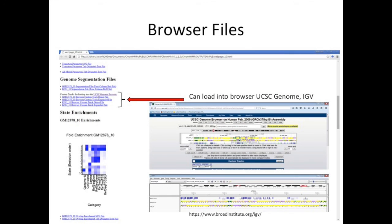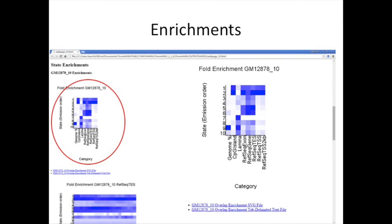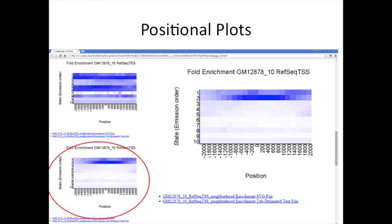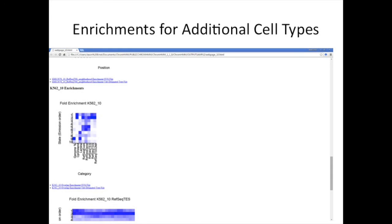The report also shows automated enrichments for certain preloaded files, with options to provide your own annotations or compute additional enrichments after you have the annotations. You can also see positional enrichments showing enrichment relative to positions such as transcription start sites. As you continue scrolling, you'll see the same information for each additional cell type you have.